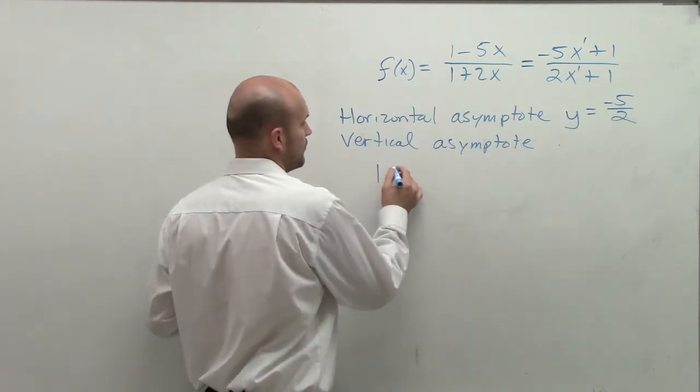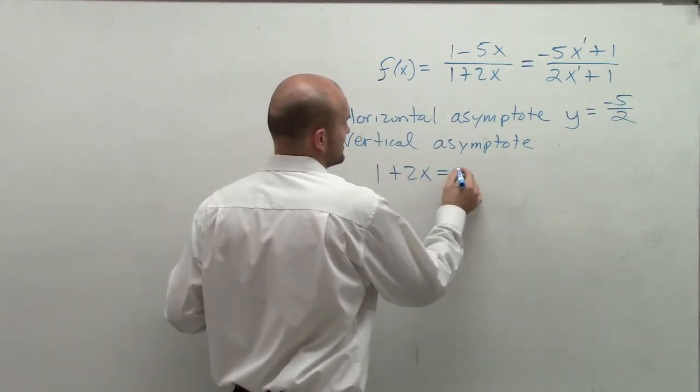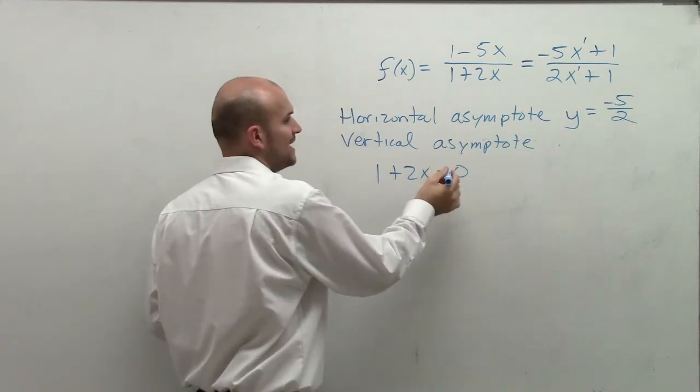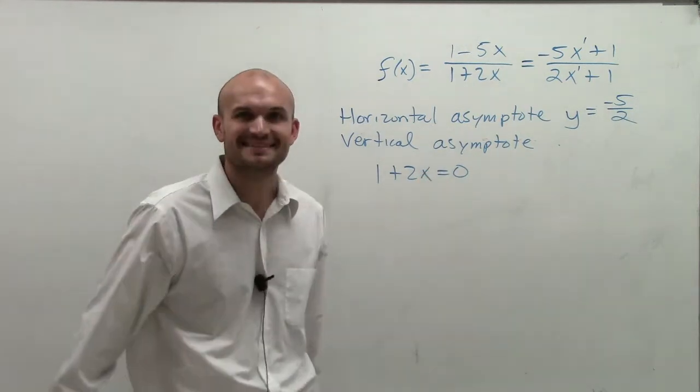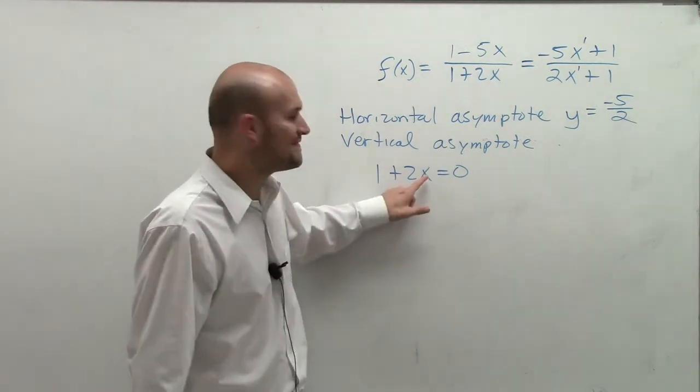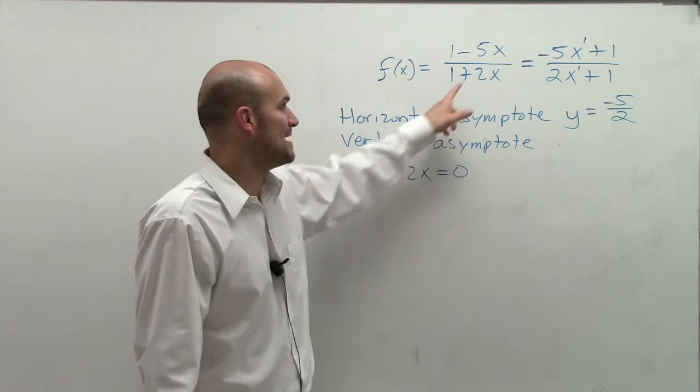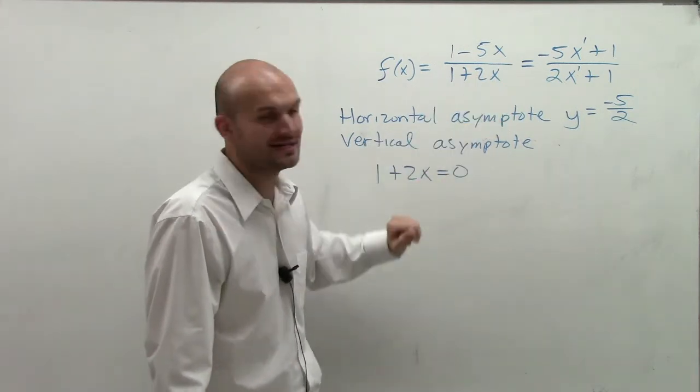So what I'm going to do is I'm going to say 1 plus 2x equals 0. So I want to find the values of x that are going to make this denominator 0. That's why I set it equal to 0.